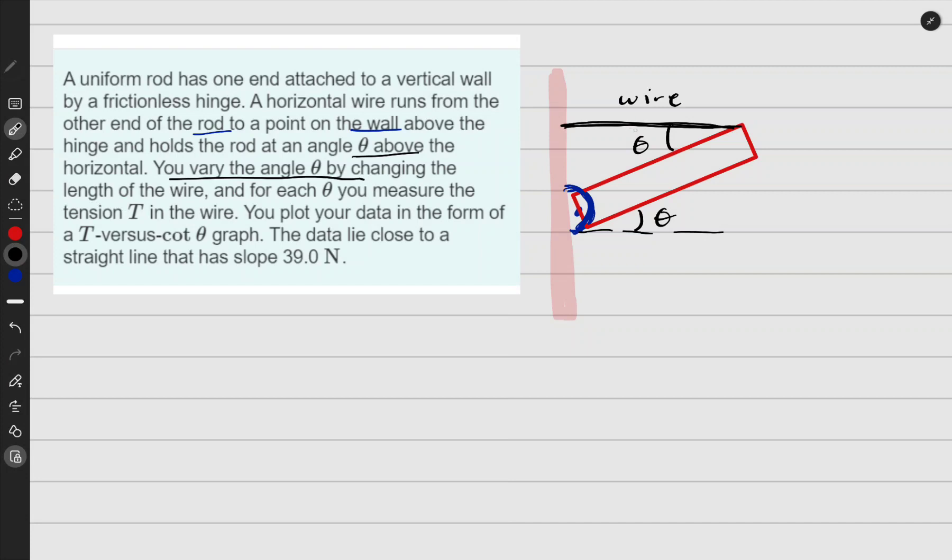Okay, and that changes the length of the wire. That's obvious. You measure the tension on the wire here. Okay, you plot your data to form a T versus cot theta. Okay, now they plot a graph—they plot a graph like this, of which is T for tension versus cot theta. Theta is this.